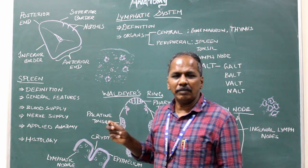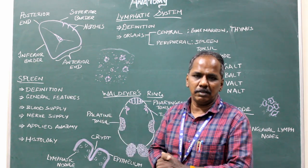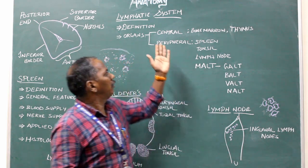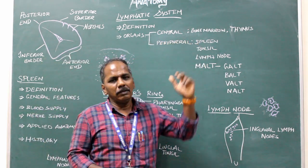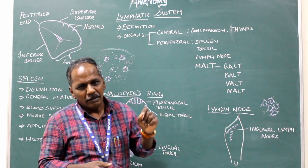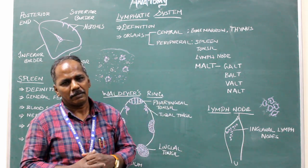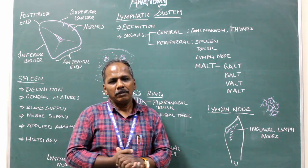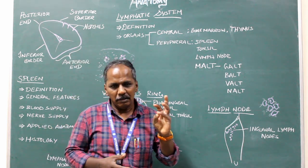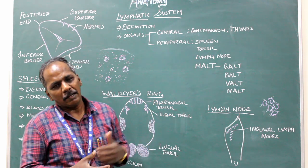The lymphatic system consists of central and peripheral lymphatic organs. The central lymphatic organs are bone marrow and thymus, and they are responsible for producing B lymphocytes and T lymphocytes. The peripheral lymphatic organs include the spleen, tonsil, lymph node, thymus, and MALT.